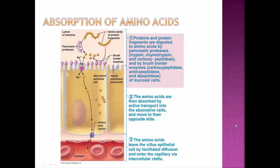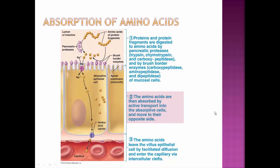Then all three monosaccharides move across the other side of the cell by facilitated diffusion and into the capillaries for transport in our blood. For amino acid absorption, proteins are broken down into amino acids by either the pancreatic proteases or brush border enzymes. The same co-transport mechanism applies — sodium is concentrated in the lumen and low inside the cell, so it diffuses in, and like the grist mill wheel turning, sodium draws the amino acids inside the cell. At the other end, amino acids leave by facilitated diffusion and enter the capillaries.